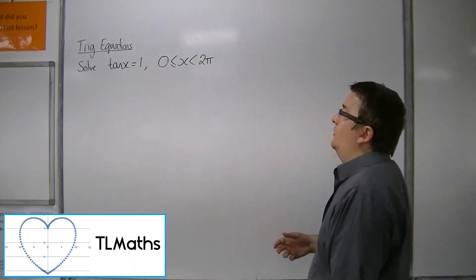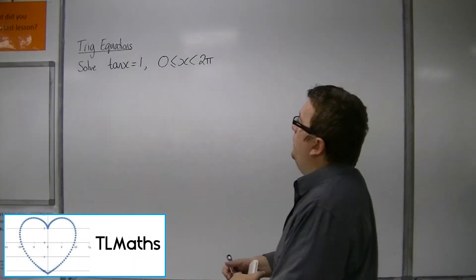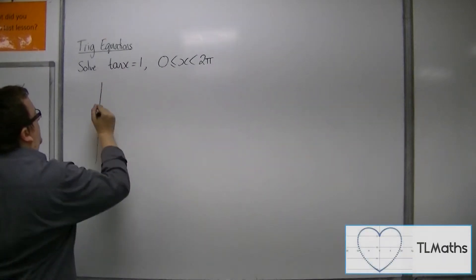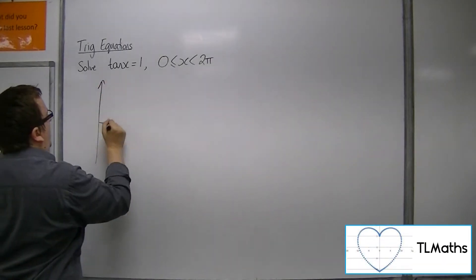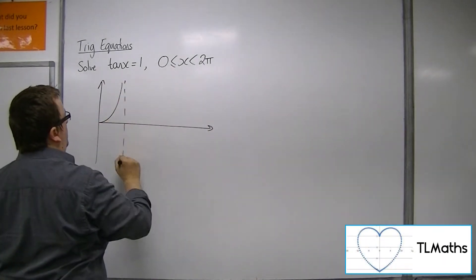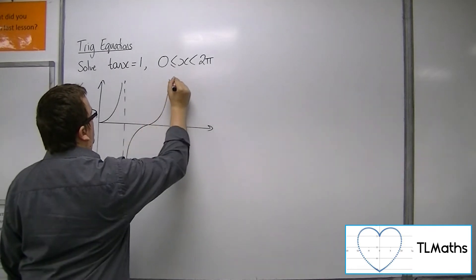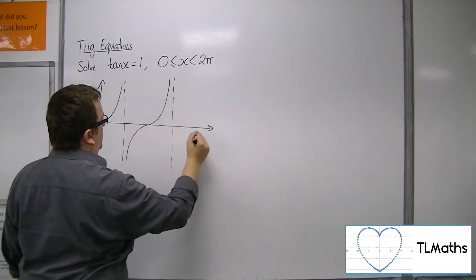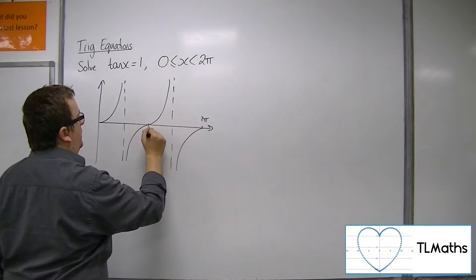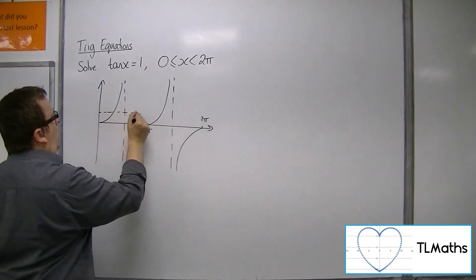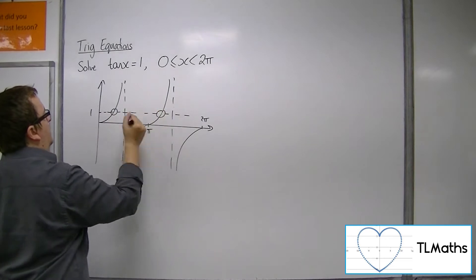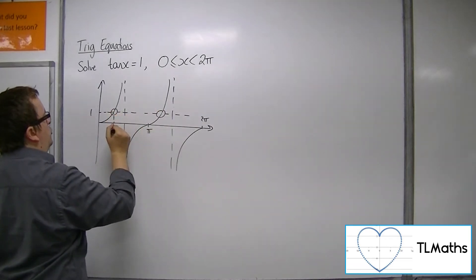Let's solve tan x equals 1 between 0 and 2 pi radians. So a quick sketch of tan between 0 and 2 pi — there's 2 pi, there's pi. Now 1 will be a horizontal line that crosses the tan curve in two positions.